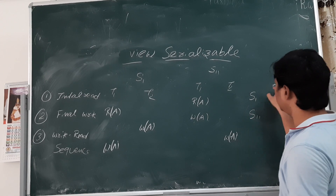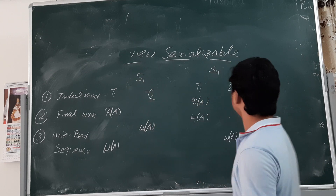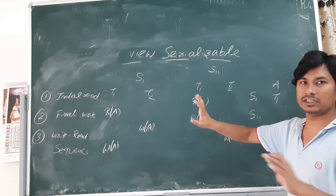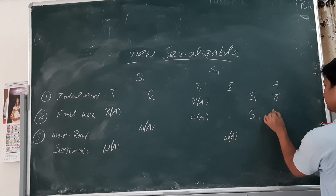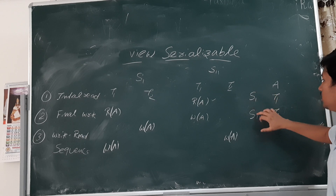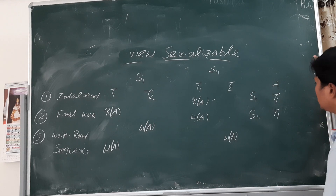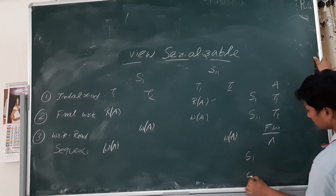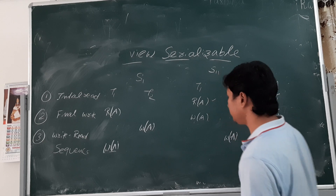Checking the initial read for data item A: in schedule S1, there is only one read operation, so it is the initial read, done by T1. In S11 also, the initial read of A is done by T1. So the initial read condition is satisfied — both schedules have the initial read done by the same transaction T1. Now we check the final write.